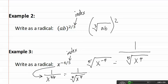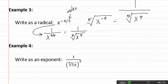Let's look at example four. Here's example four. We need to write this as an exponent. So, let's start by first moving this to the numerator, giving us the cubed root of five x to the negative two.